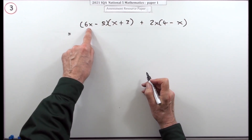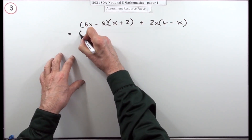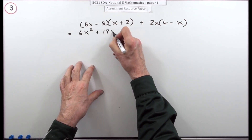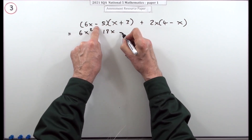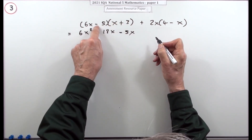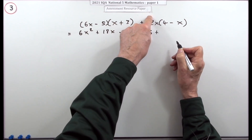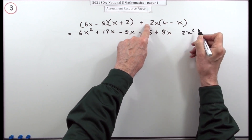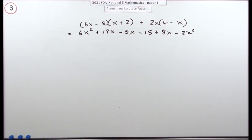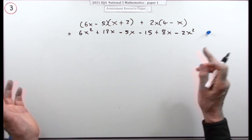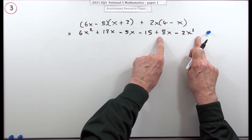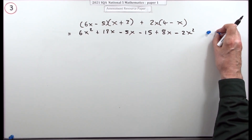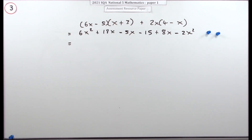6x times x is 6x squared; 6x times 3 is 18x; then 5 times x but minus gives minus 5x; 5 times 3 but minus gives minus 15. Then 2x times 4 is 8x, and 2x times x is 2x squared — but minus times minus gives plus. There are two marks: one for each bracket expansion, even though the work isn't equal between the two.